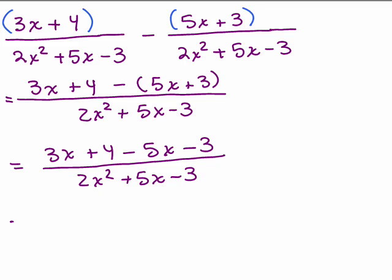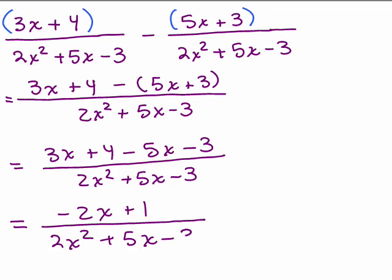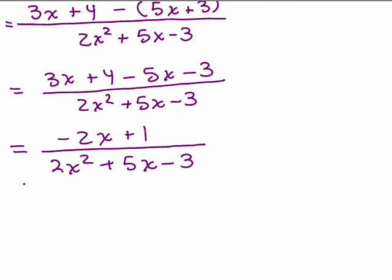Over 2x squared plus 5x minus 3. And let's simplify the top. So I've got 3x minus 5x is negative 2x, and 4 minus 3 is plus 1. And that's what I have in the numerator. In the denominator, I still have the 2x squared plus 5x minus 3. So now the question is, can we factor this? Now, notice the top is negative 2x plus 1. So that's a little bit strange because it has a minus. I'm just going to leave that for now and go ahead and do factoring of the denominator.